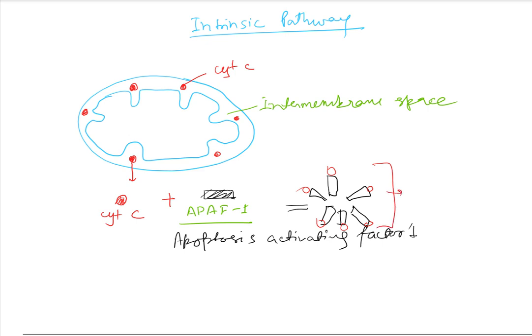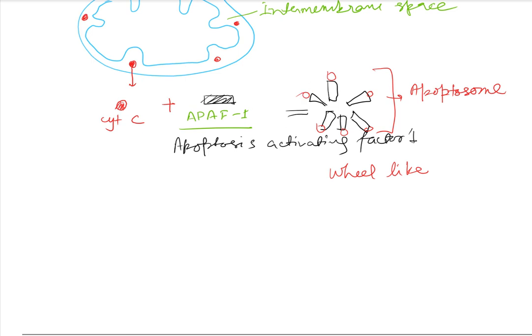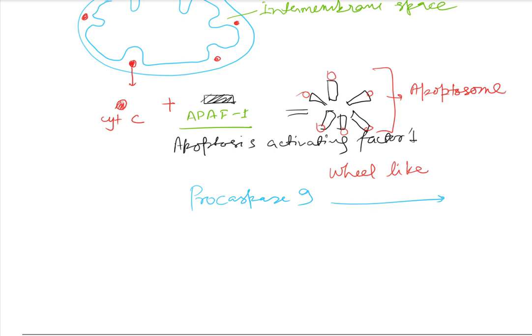This leads to formation of a molecule known as the apoptosome. This complex is wheel-like, a hexamer, and it binds with pro-caspase 9 and converts it to activated caspase 9.